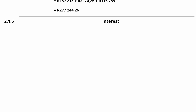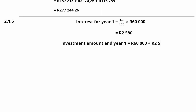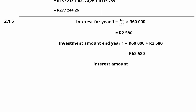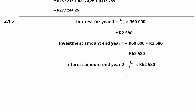The total interest for Year 1 is 4.3/100 × R60,000 = R2,580. Her investment amount at the end of Year 1 is R60,000 + R2,580 = R62,580. The interest earned in Year 2 is 5.1/100 × R62,580 = R3,191.58. So her investment amount at the end of Year 2 is R62,580 + R3,191.58.